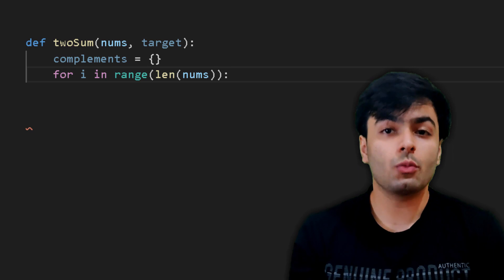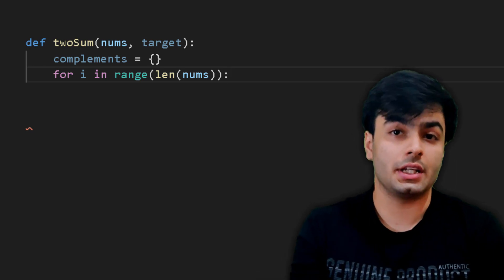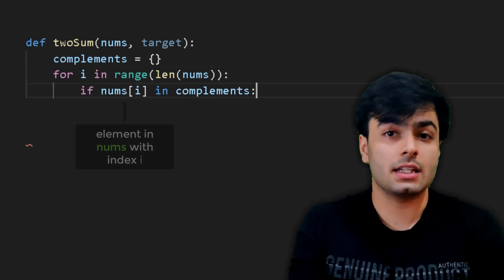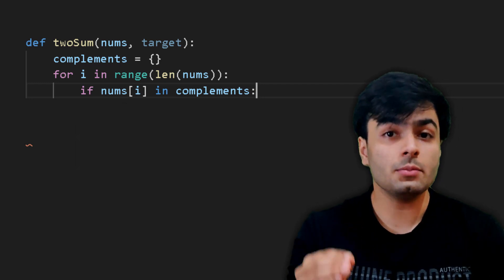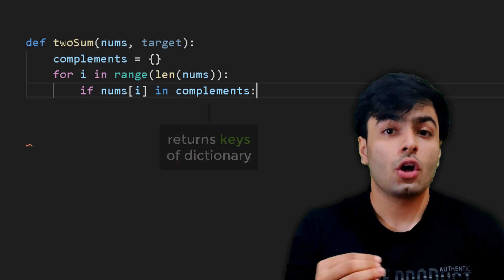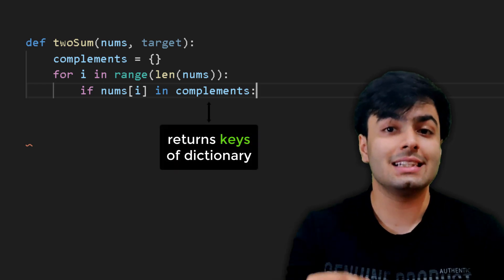Now, for each element in the list, we want to check if it is a key in our dictionary. This can be done using an if statement and the in keyword. It is important to remember that in the statement if nums square brackets i in complements, complements only returns the keys in the dictionary.